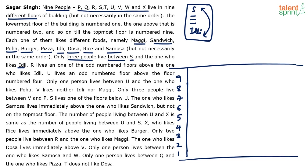R lives on one of the odd-numbered floors above the one who likes idli. So R must come above idli and on an odd-numbered floor. Odd-numbered floors are 1, 3, 5, 7, 9 — but R has to be above idli, so R cannot be on the first floor. R can be on the 3rd, 5th, 7th, or 9th floor.